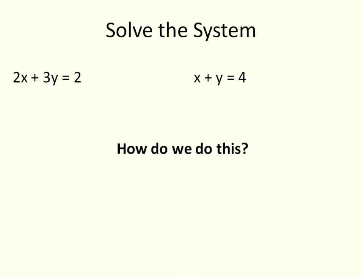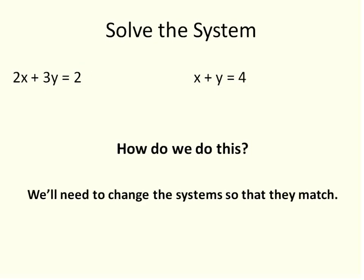So here again is the steps laid out for you. You have two equations. How do we do it? We'll need to change the system so that they match. Then we do this using multiplication. After they match, you'll go ahead and use linear combinations, just like normal.